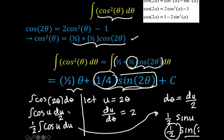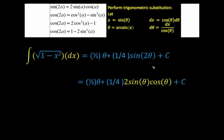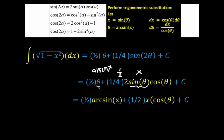Remember that we are integrating the square root of 1 minus x squared dx. What we have so far is in terms of theta, so we go back to our prior substitutions. From sine theta equals x, we replace sine theta with x. The one fourth times 2 becomes one half, and theta equals arcsine of x. So we now have one half arcsine of x plus one half times x times cosine of theta plus c. Everything is in terms of x except cosine of theta.